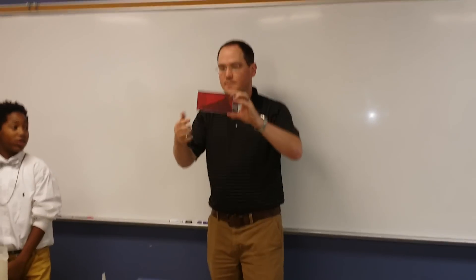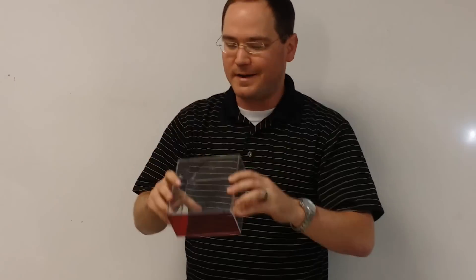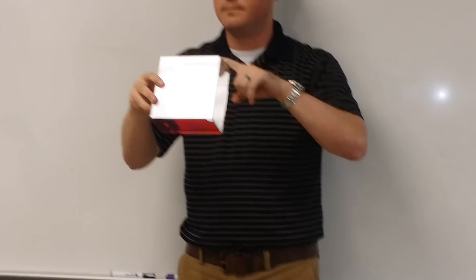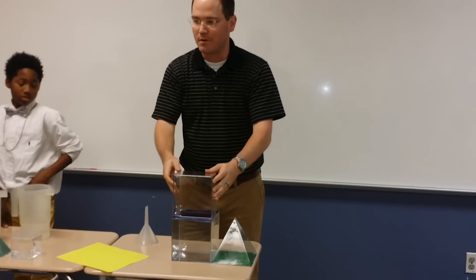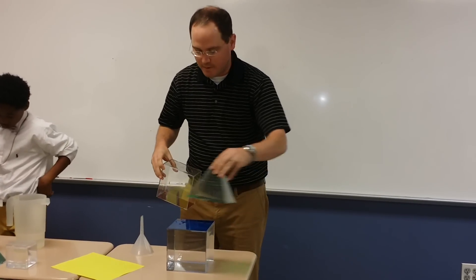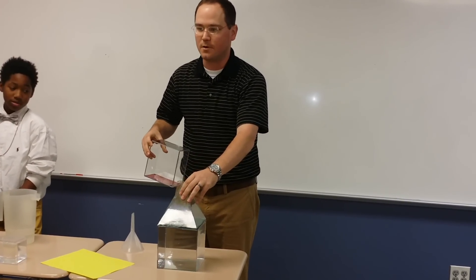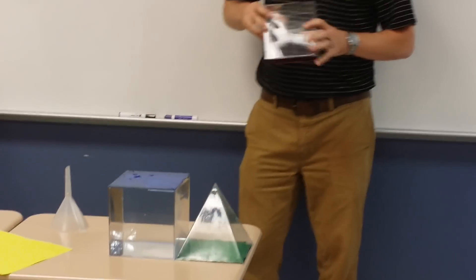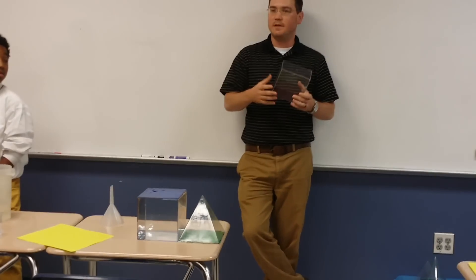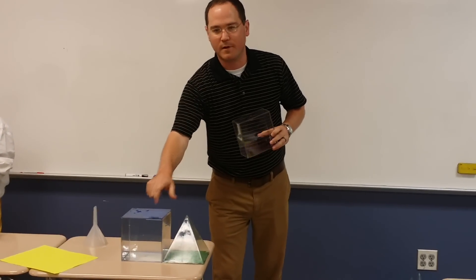We took three of those pyramids, dumped them into the prism, and it filled up exactly perfectly. That only happens if you have the exact same base and the exact same height. If I change the base and height, then it doesn't work out that way. Is my base the same as this blue one? No — it's a lot smaller. So if I did three of these and put it in here, it would overflow. The bases and heights have to be the same. This is just to prove to you guys where this formula is coming from — that's why a pyramid is one-third of the volume of a prism.